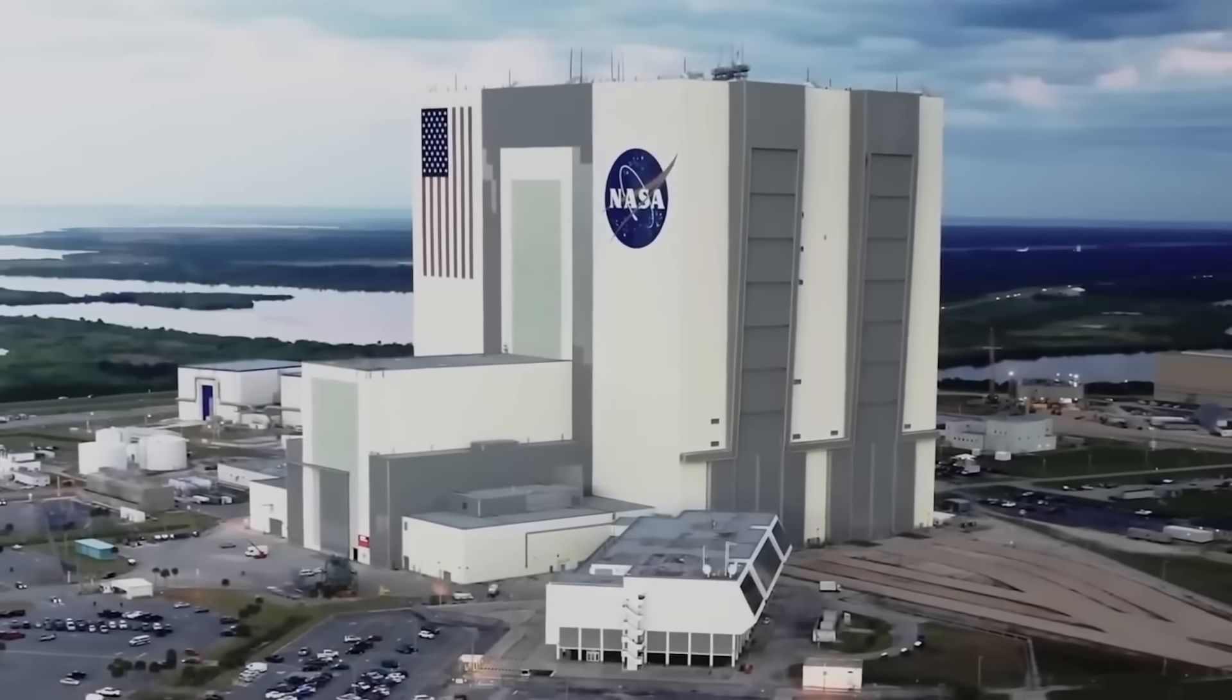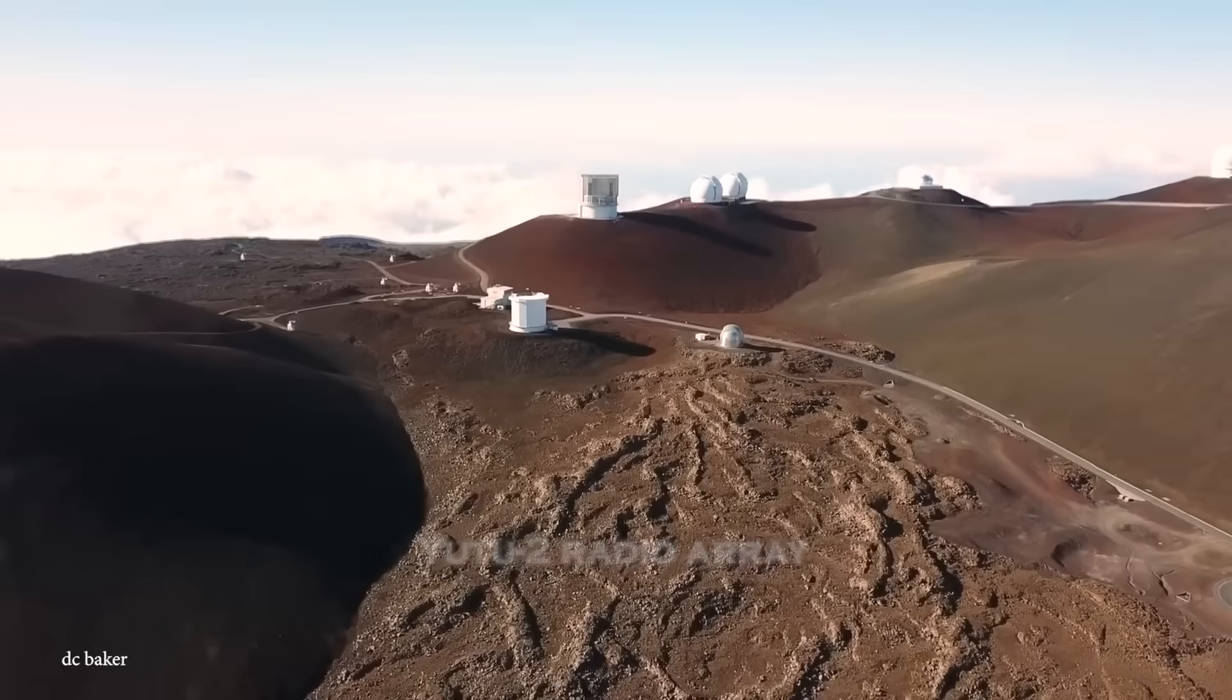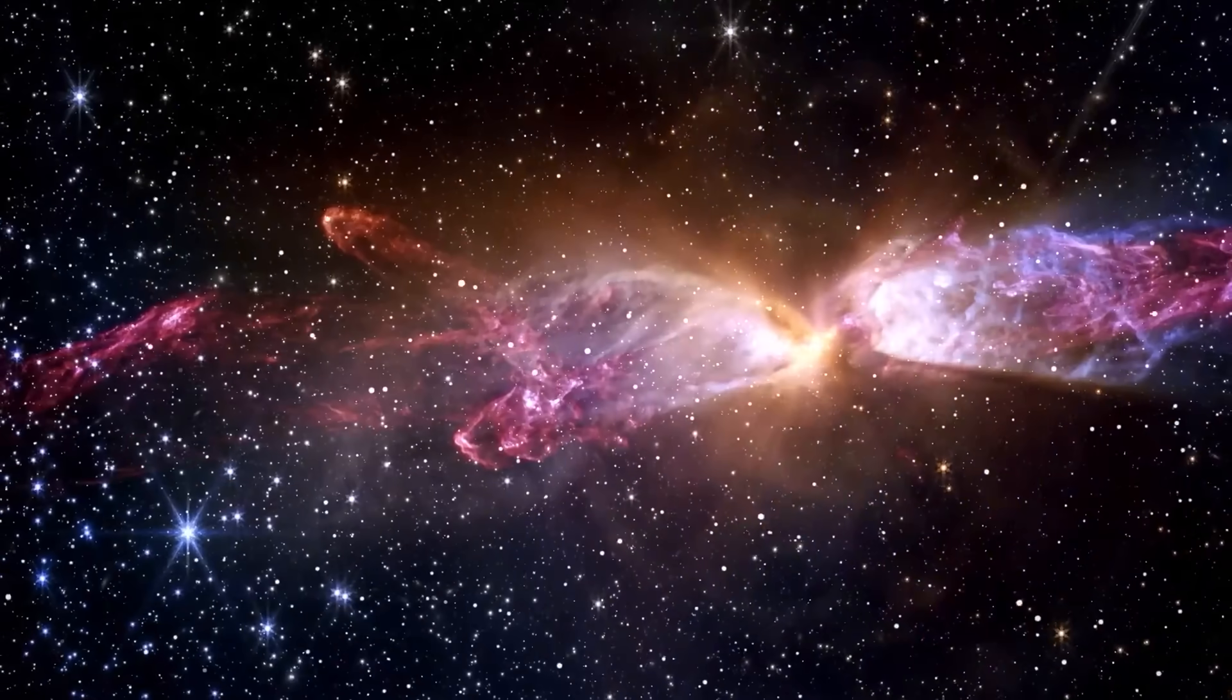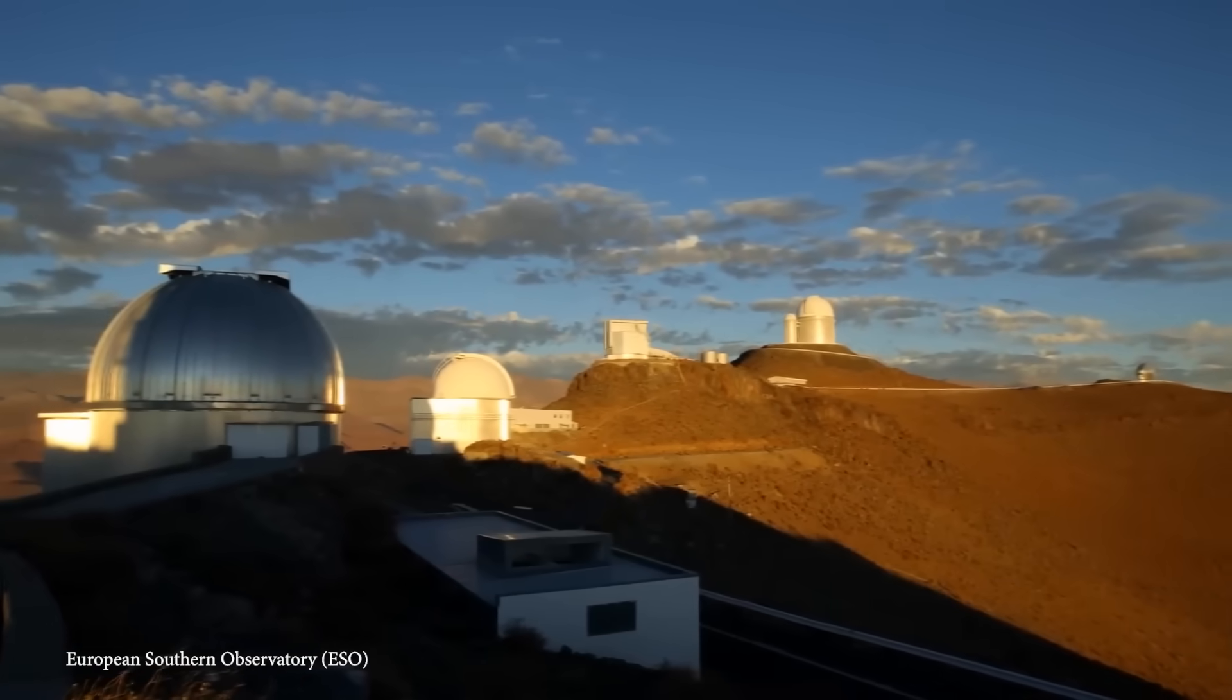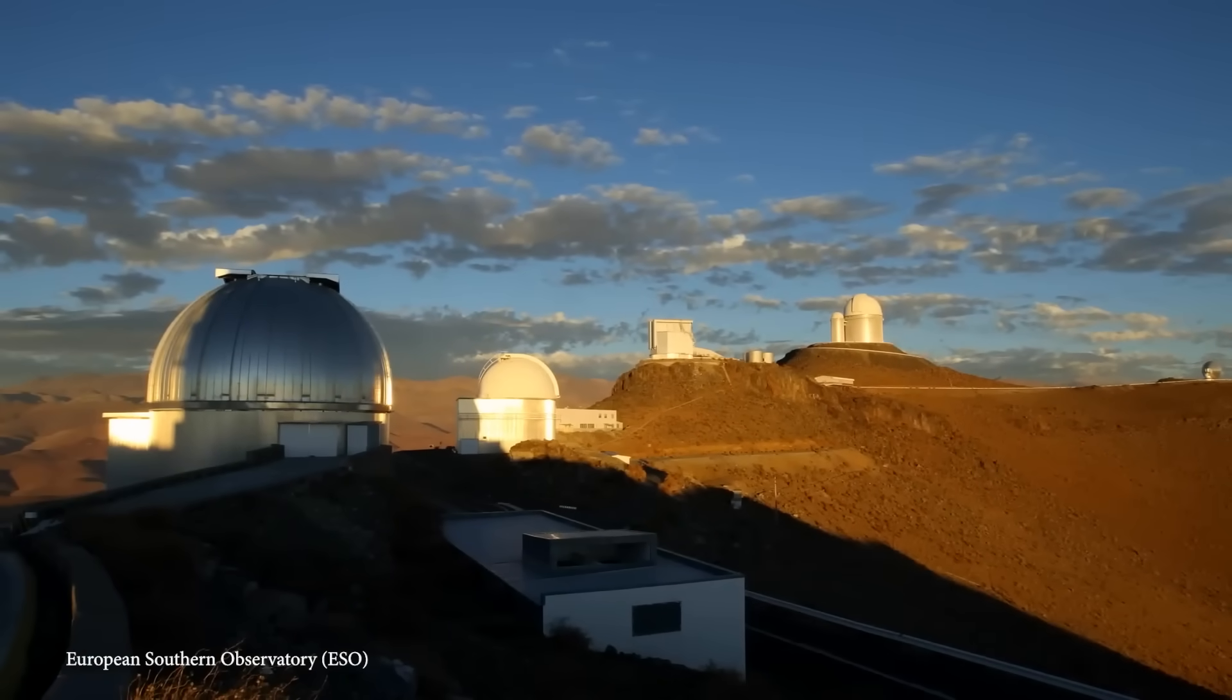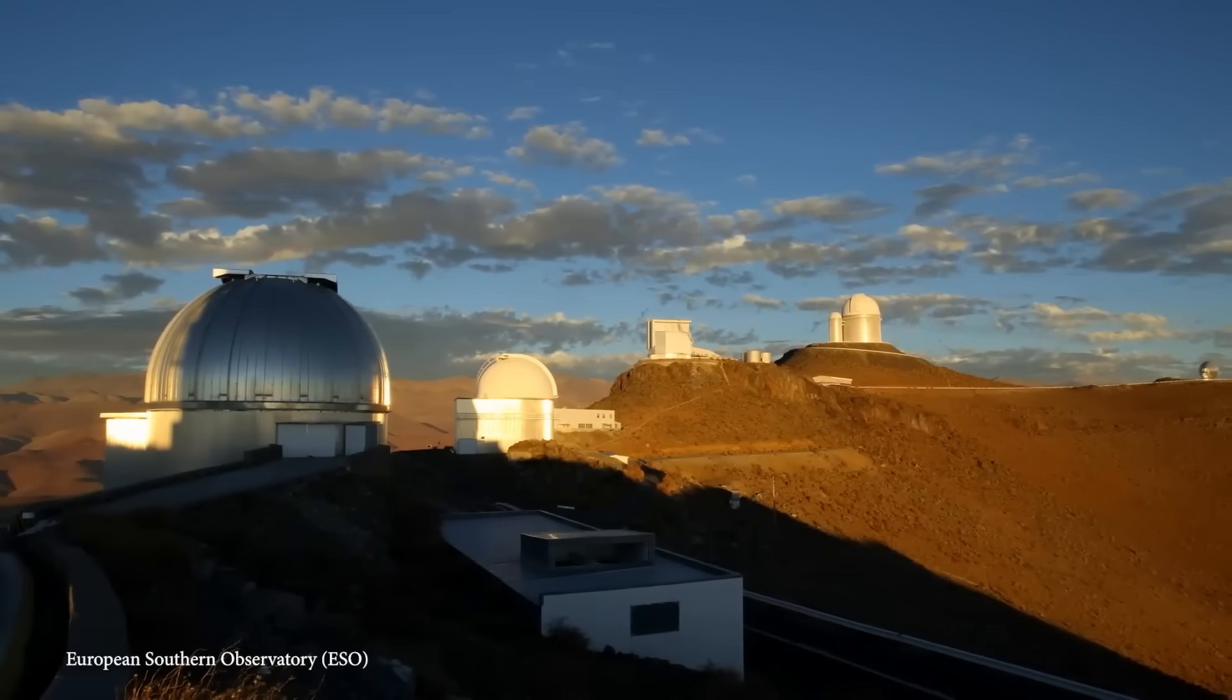NASA doubled its monitoring schedule. China reactivated its U-2-2 radio array, normally used for lunar missions, to track deep space frequencies coming from the object's vector. And the European Space Agency deployed emergency protocols from its Planetary Defense Office, a move typically reserved for imminent impact events.